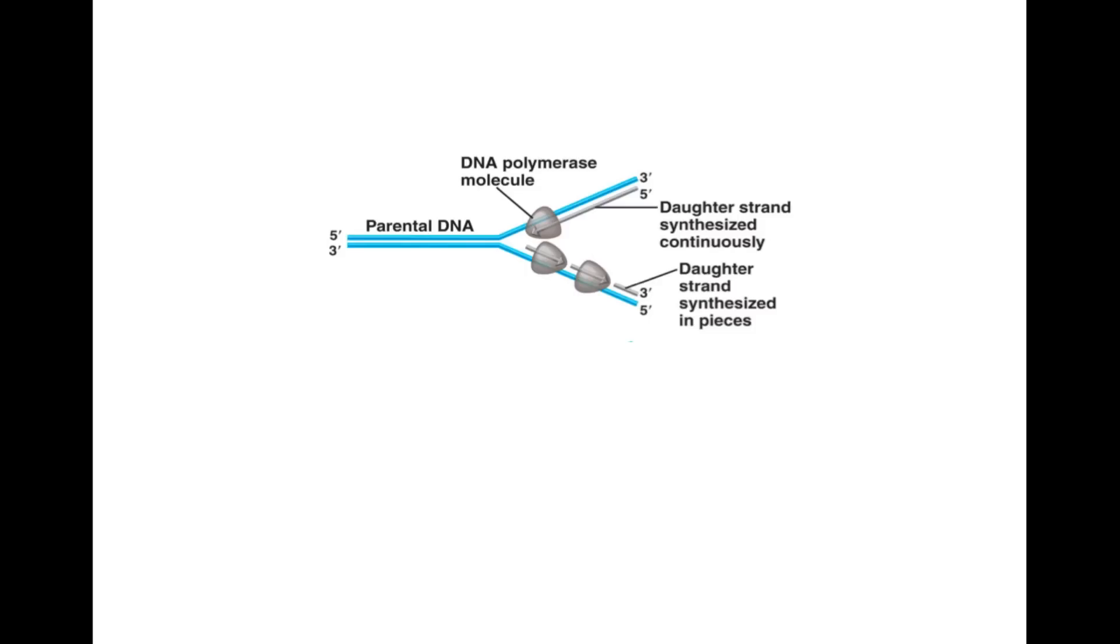When replication begins, a DNA polymerase molecule attaches itself at the 3' end of the parental strand and attaches nucleotides to the 5' end. The DNA polymerase always goes in the 3' to 5' direction.